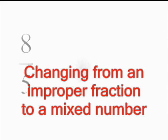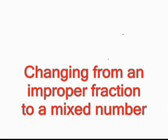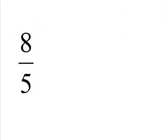The next thing we'll look at is changing back from an improper fraction to a mixed number. Example here is 8 over 5, or 8 fifths. Very simple. Like any fraction, if you just read it, it says 8 divided by 5.